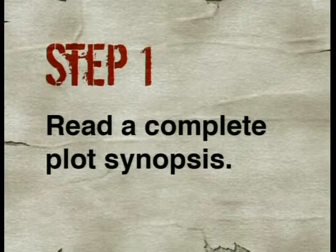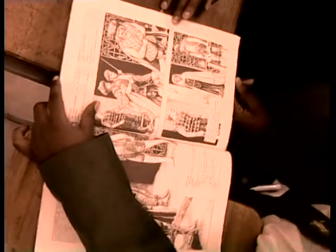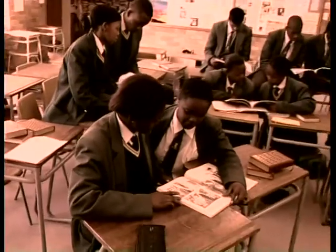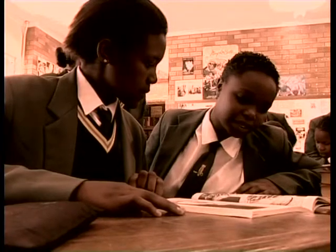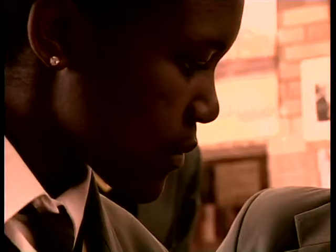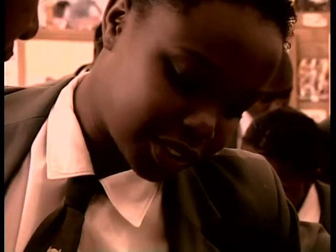Firstly, read a complete plot synopsis. A synopsis is a summary. There are many plot summaries available, but many of them are just too brief to provide a detailed scene-by-scene account of the events. They may be useful for getting a general overview, but you will need more detail than a one or two-page synopsis will provide. Instead, look for a synopsis that incorporates passages from the play directly into the discussion. Although you might not understand the passages at first, when you later read the play, you will know exactly what is happening in the story.